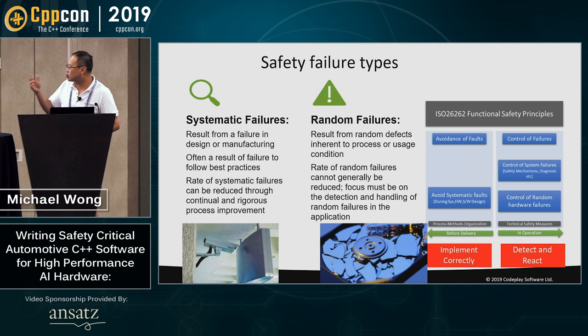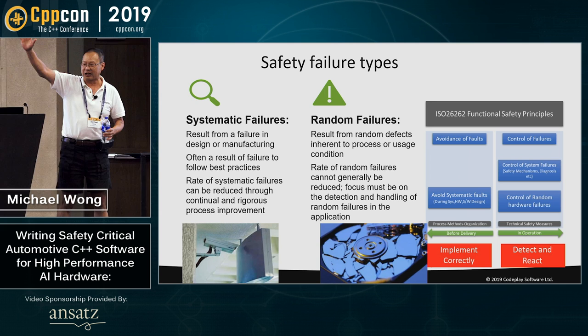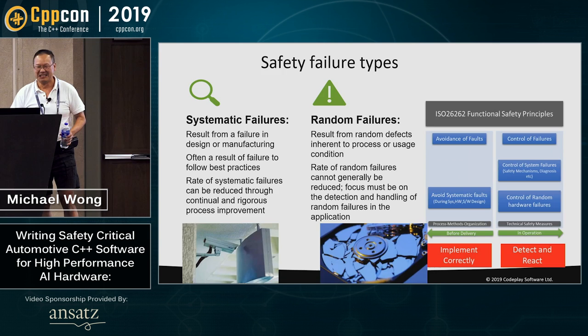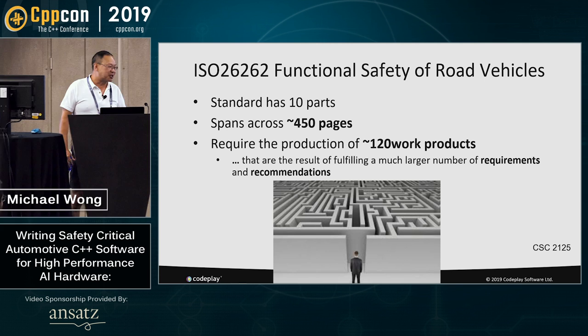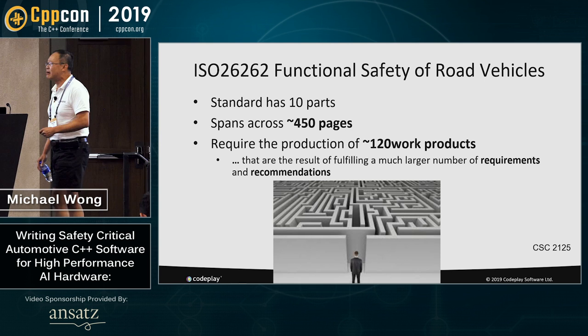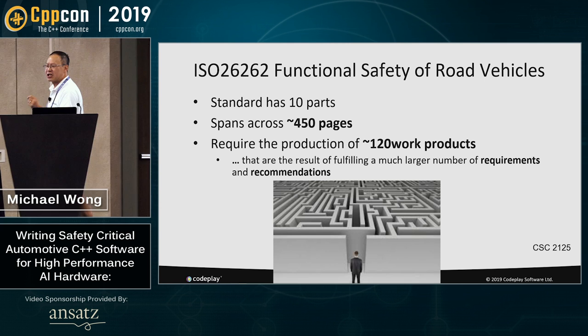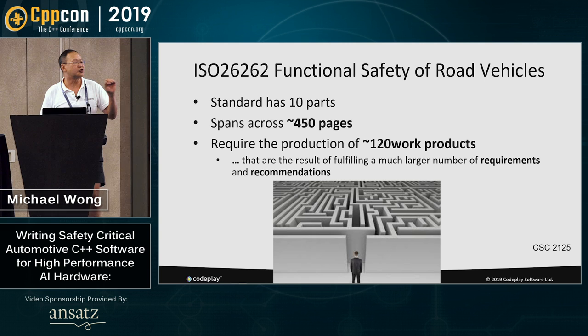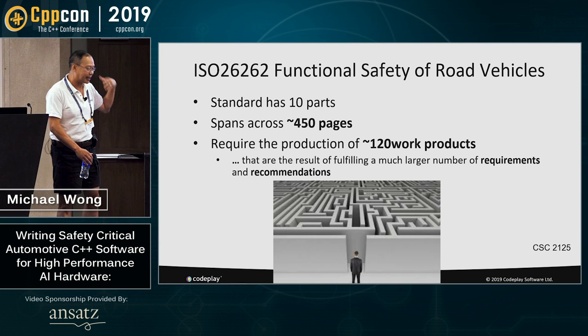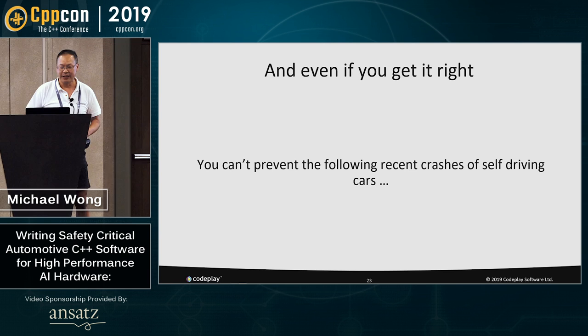With systematic failures, the only thing you can do is make sure you implement correctly. ISO 26262 has 10 parts spanning 450 pages and 120 work products — it's like a maze. Any company that wants to make their product conform probably has to spend over a couple of million dollars to get enough inspectors and inspections, and some of this has to be examined by outside parties to be verified safe. And even if you get that right, you're not going to prevent these self-driving car crashes.